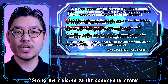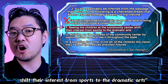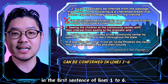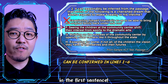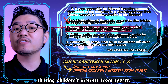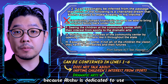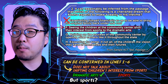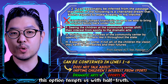Option F reads: 'seeing the children at the community center shift their interest from sports to the dramatic arts.' This statement appears to be confirmed in the first sentence of lines 1 to 6. Again, this is a trap of familiarity — 'I've seen something like this in the first sentence.' But the first sentence never mentioned anything about shifting children's interest from sports. It does talk about the dramatic arts because Apshu is dedicated to use his talent as a playwright, but sports? Nothing. Again, this option tempts us with half-truth. Eliminated.